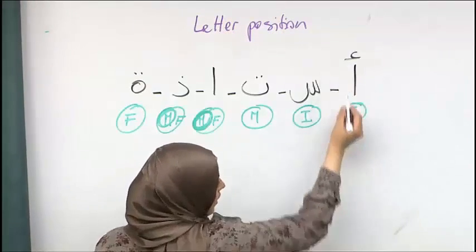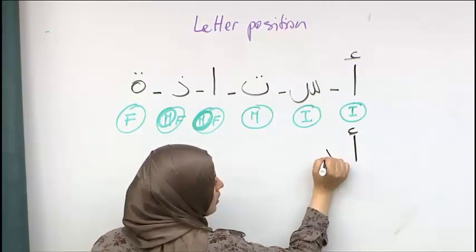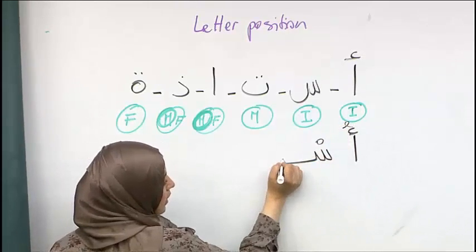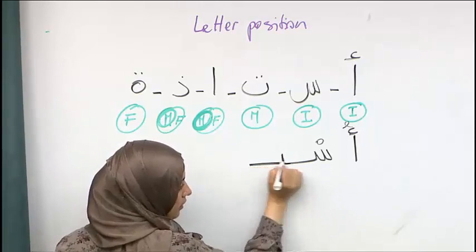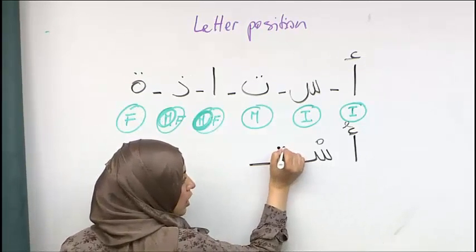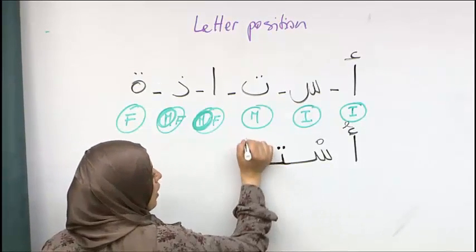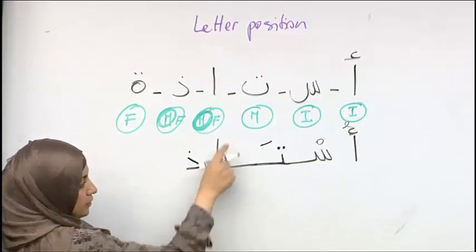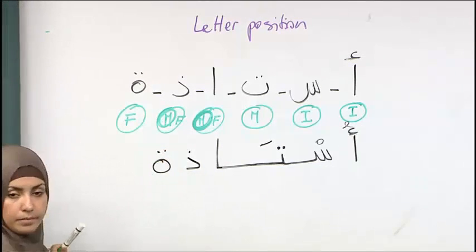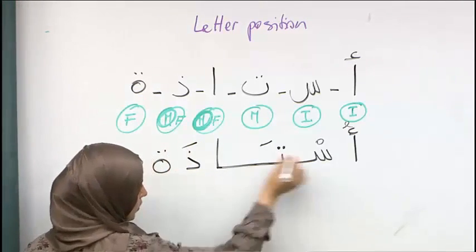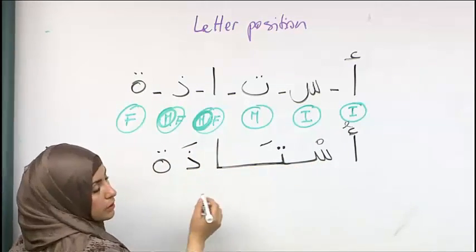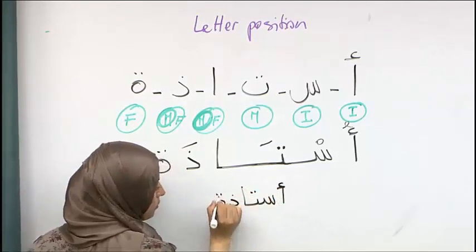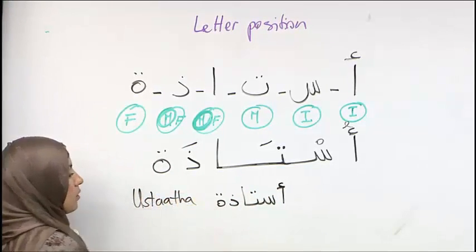So we're going to write it. Initial, and it's isolated. A. S. See the initial of sin? And then we have ta. Remember ta. Every time you write it in the medial or initial, you make sure that the dots are right on top of the little stick. And then we have sta. And then dal, you see? It's isolated. And then ta marbuta. And this word is ustada. This should not be the exact same spacing between the letters, but I'm just writing it so you can tell which one is which. I'm going to write it in normal spacing. And this would be the word ustada.